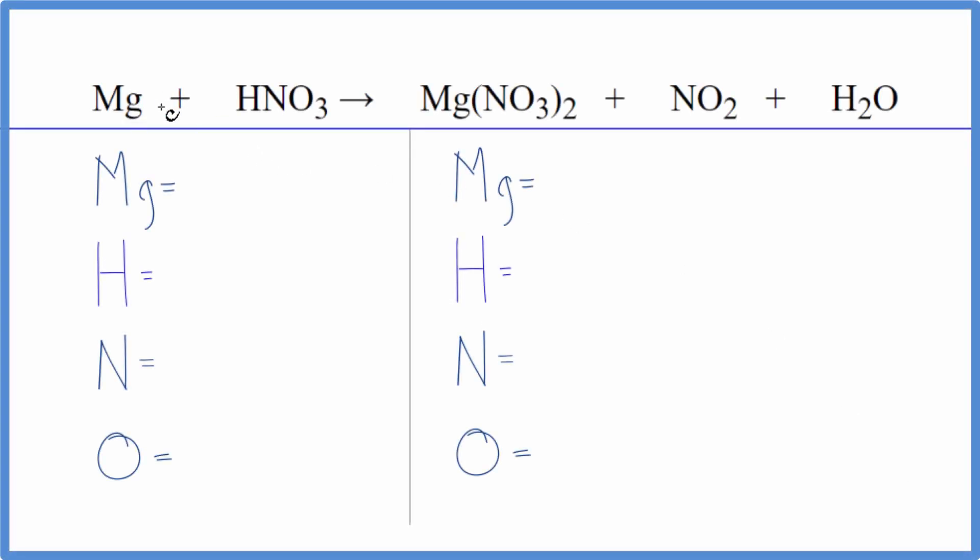In this equation, we have Mg plus HNO3. This is magnesium and nitric acid. And for these products to be formed, specifically this NO2 here, this has to be concentrated nitric acid. If you have dilute nitric acid, you have different products.